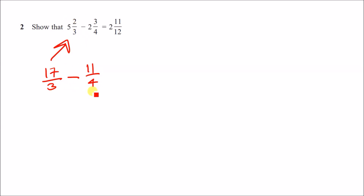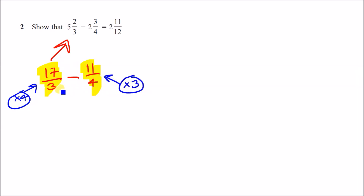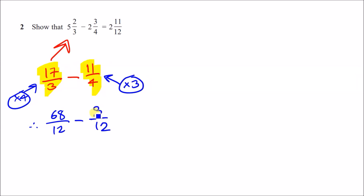Now make common denominators. Multiply them by what they don't have: the fraction over three, multiply up and down by four; the fraction over four, multiply up and down by three. Both will then be over 12. So 17 times four gives 68 over 12, and 11 times three gives 33 over 12.